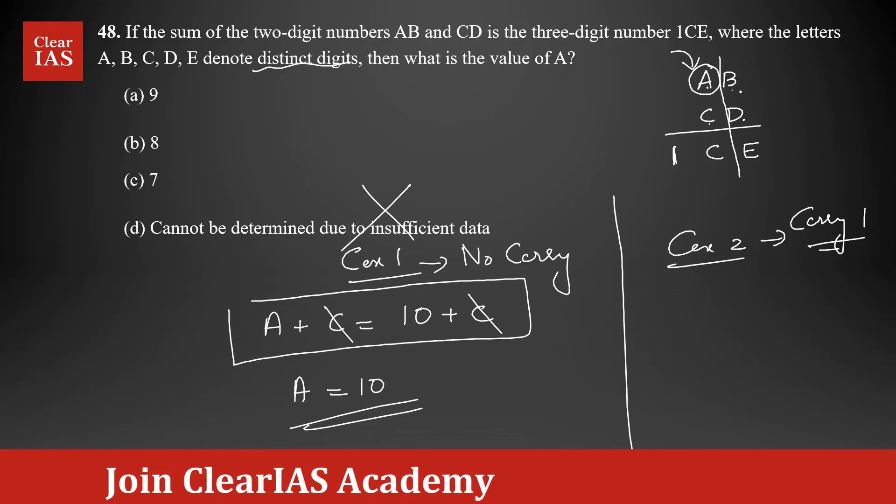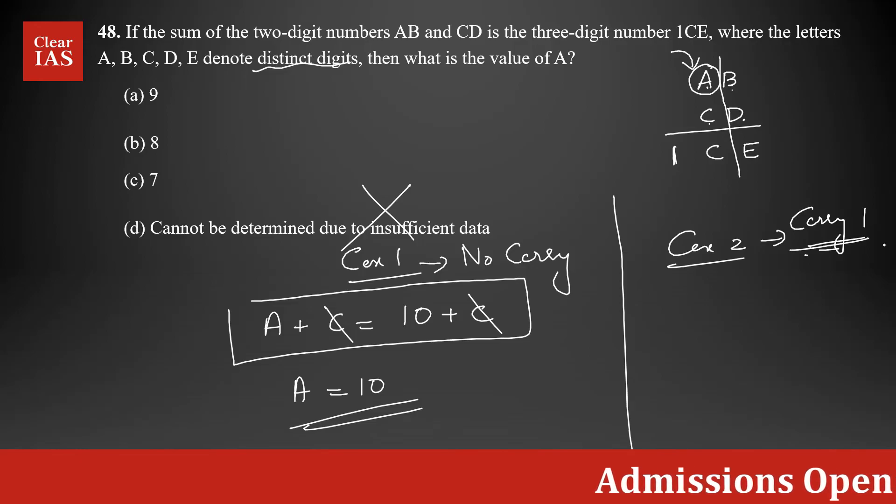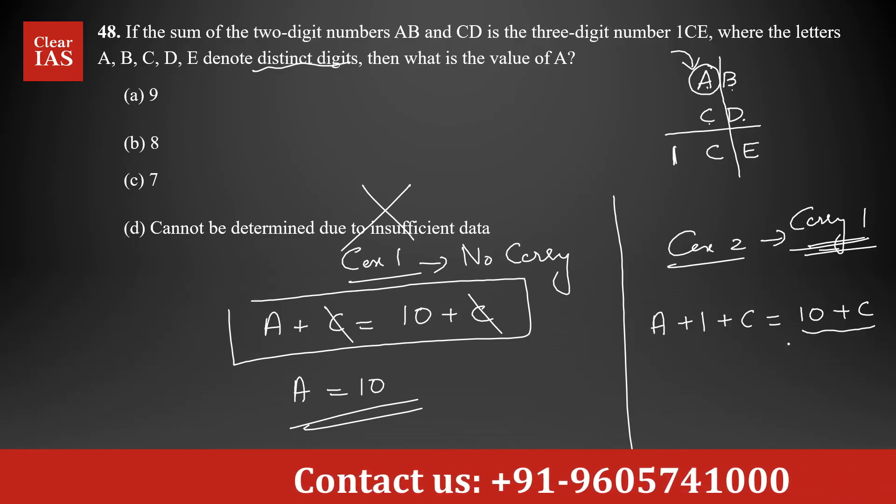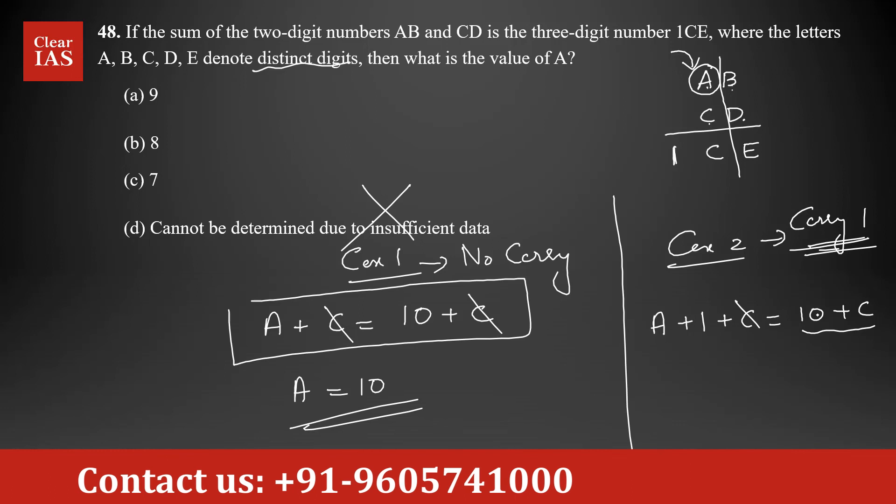So definitely there will be a carry from adding B plus D here. There will be a carry of 1. So I need to consider case 2. So that means, as per case 2, A, then you have a carry of 1, then you are adding C, you will be getting 10 plus C. This is the sum you are getting after adding 1 as carry. So if you simplify it, C is getting cancelled, value of A is equal to 9.